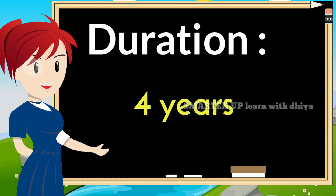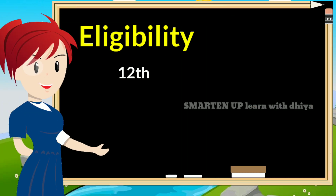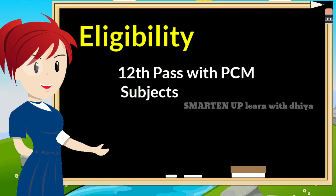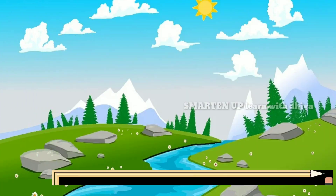As it is an engineering degree, you will study for 4 years. In this course, you will study physics, chemistry, and maths. You may also study biology or computer science, as these subjects are important for cut-off calculations.